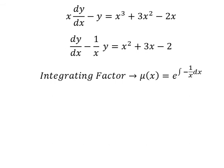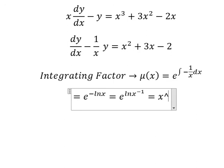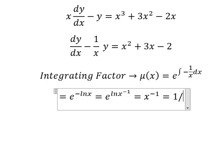So this one we have e to the power of negative ln(x). The negative sign will go inside the natural logarithm here, and we have x to the power of negative one, so we have one over x.